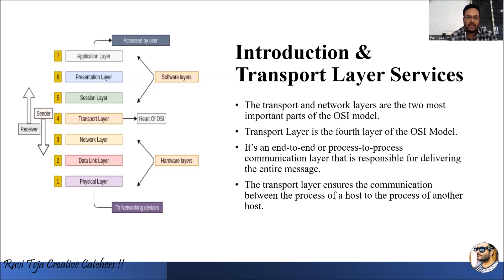The transport layer is the fourth layer of the OSI model. It is an end-to-end or process-to-process communication layer that is responsible for delivering the entire message. Mostly, the transport layer deals with the communication between one process of one host to the process of another host.